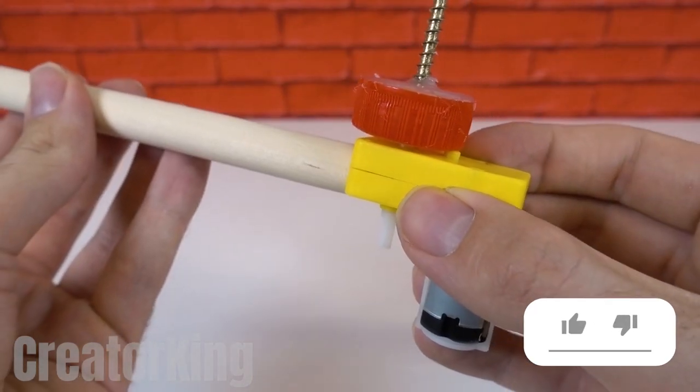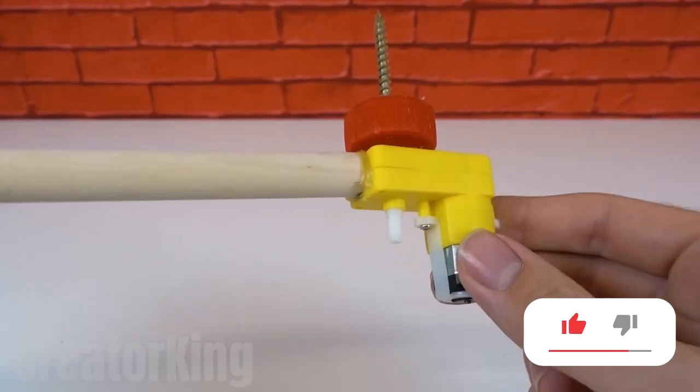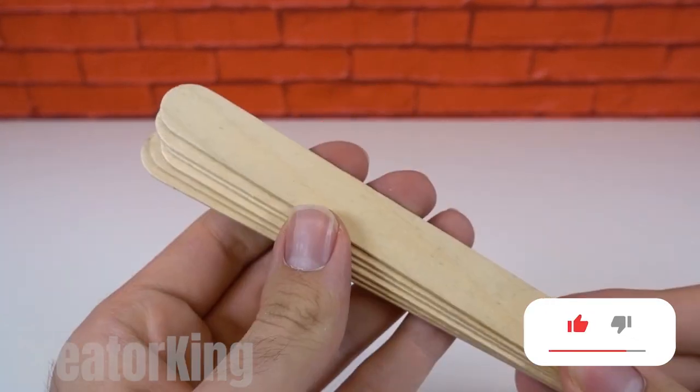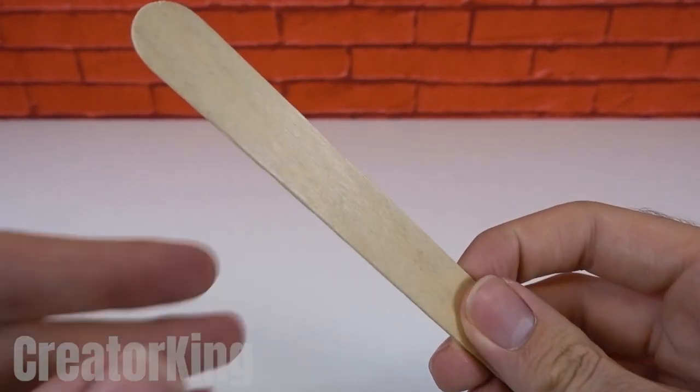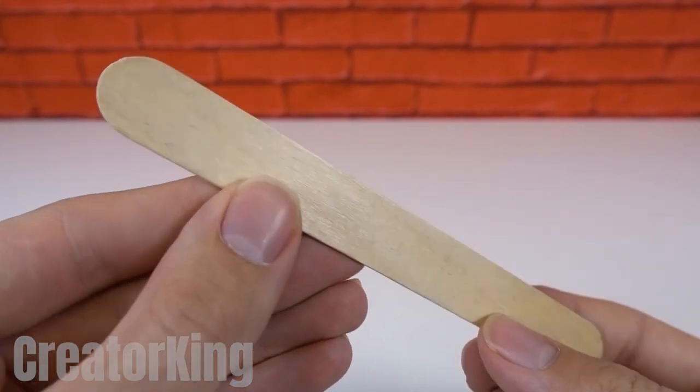It reminds me of a toy I had as a child that threw plastic discs. Get a few tongue depressors from the nearest pharmacy. Take one and cut off one of the rounded ends. Then make a diagonal cut on the opposite end.